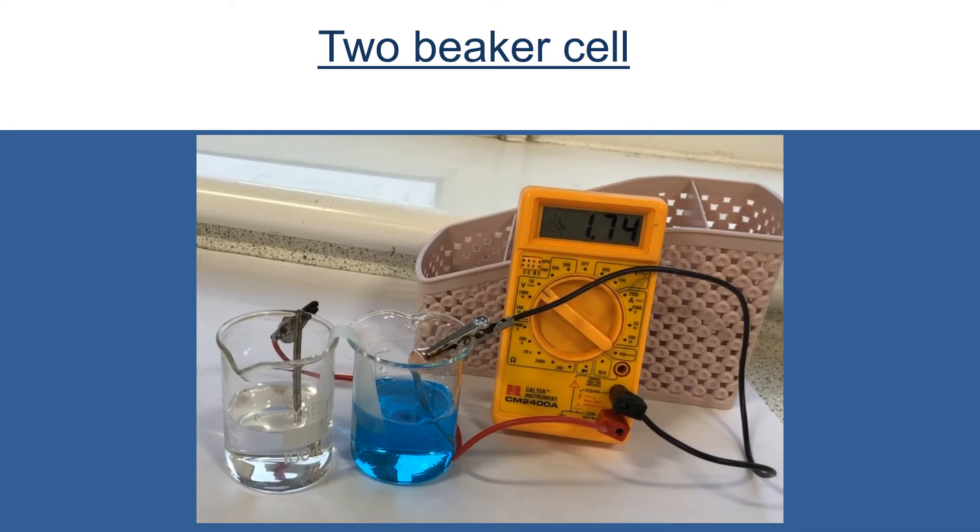The more reactive metal in a chemical cell like this always gives away its electrons. So the magnesium gives away electrons and forms magnesium ions. In the beaker we'll have more magnesium ions forming.